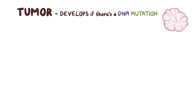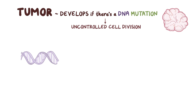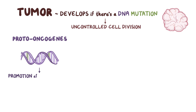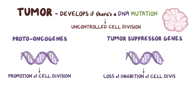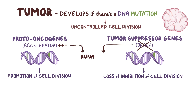A tumor develops if there's a DNA mutation in any of these cell types that leads to uncontrolled cell division. Typically, these are mutations in proto-oncogenes, which result in a promotion of cell division, or mutations in tumor suppressor genes, which result in a loss of inhibition of cell division. You can think of proto-oncogenes as the accelerator, or gas pedal, and tumor suppressor genes as the brakes. Too much acceleration, or an inability to brake, can lead to runaway cell division.